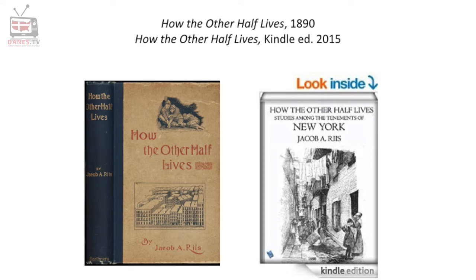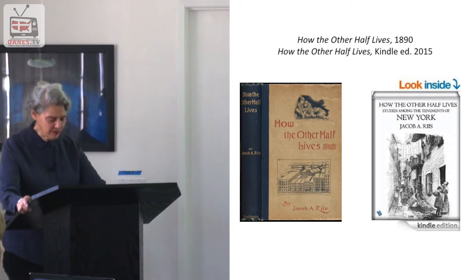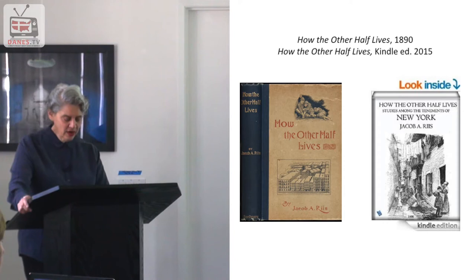Today his bestseller of 1890, 'How the Other Half Lives,' is a classic American text that is continuously being reprinted. There's also a vast literature on Riis — even a book-length bibliography of writings about him published in the 1970s, and 40 years later there is still a lot more published about him. He has come to represent many things to many people.